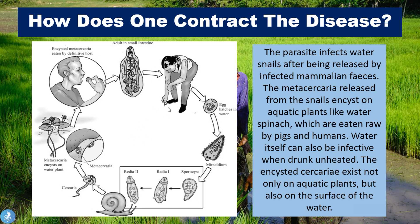Looking at the life cycle diagram, we see that the human defecates in the water source, then we have the eggs which hatch in the water and form miracidia — a single form called a miracidium — which infects the snail. From the snail we have the development of cercariae or metacercariae, which stick to water plants such as spinach or any herbs grown in aquatic regions. One then ingests the spinach or even the contaminated water itself. The encysted metacercariae are eaten by the definitive host, and then we have the development of intestinal flukes in the small intestine of the human. And so the cycle continues.